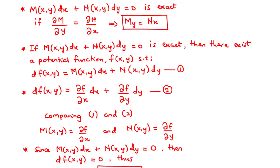In this lesson, we are going to solve exact differential equations. A first order ordinary differential equation of the form M(x,y)dx + N(x,y)dy = 0 is said to be exact if the partial derivative of M with respect to y is equal to the partial derivative of N with respect to x — written simply as M_y = N_x.